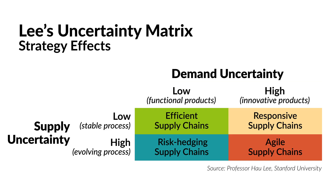Let's start by revisiting Professor Howley's uncertainty matrix, which tells us that supply chain strategy is a function of both supply and demand characteristics. In my opinion, this is hands-down the best framework for conceptualizing supply chain strategy. It gives managers clear guidance about when to use each type of strategy and gets all of us thinking about supply chains in terms of supply and demand uncertainty.